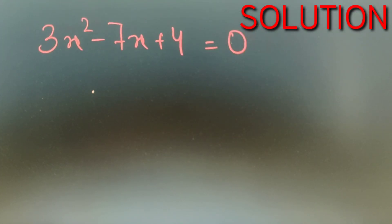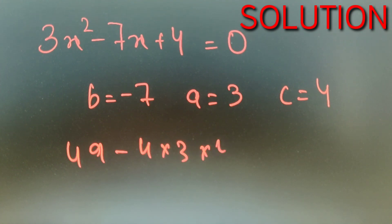So according to our given quadratic equation, the value of b is equal to minus 7, the value of a is equal to 3, and the value of c is equal to 4. So b squared minus 4ac is equal to 49 minus 4 into 3 into 4, which is equal to 49 minus 48, and which is equal to 1.